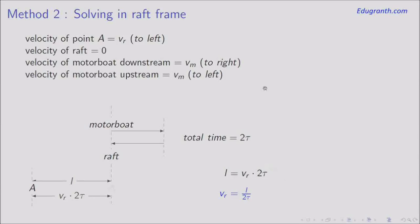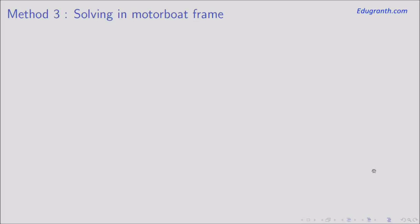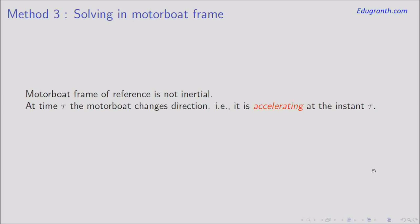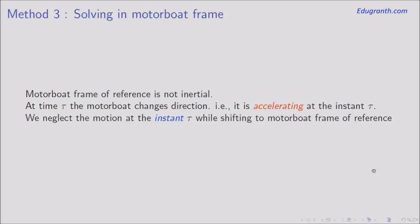The motion of the motorboat gives us the time information, and the motion of point A gives us the distance. Let us also analyze the motion in the motorboat frame of reference. A point to note is that the motorboat frame is not inertial, because at time tau the motorboat changes direction — it accelerates at that instant. To deal with this accelerated frame we simply ignore the motion at this instant tau; for the remaining motion the motorboat frame is inertial since it moves with uniform velocity.